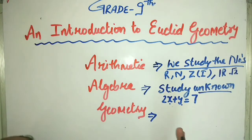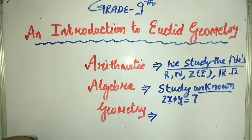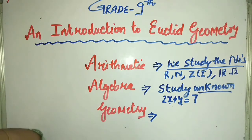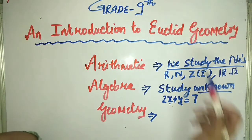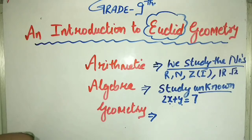Now, come to geometry. In geometry, we study about figures. But before geometry, I must conclude that you have two types of figures. The first is related to plane geometry and the second is related to non-plane geometry. We have two types: plane geometry and non-plane geometry. Let us discuss plane figures and non-plane figures, then I will come to the great mathematician Euclid.